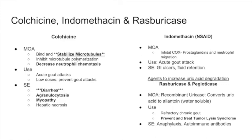Colchicine can also cause agranulocytosis, myopathy, and rarely hepatic necrosis. Remember colchicine stabilizes microtubules — this distinguishes it from taxanes, which have a somewhat different mechanism. Indomethacin is an NSAID that inhibits COX, prostaglandins, and neutrophil migration. It is used for acute gout attacks and carries typical NSAID side effects including GI ulcers and fluid retention.